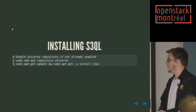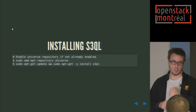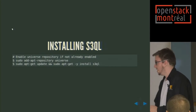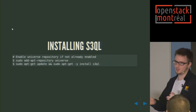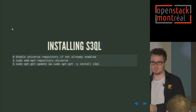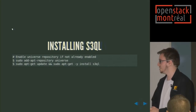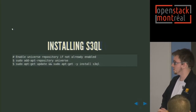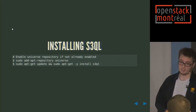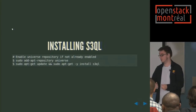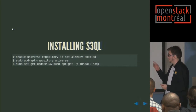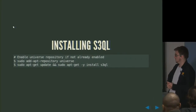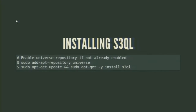Installing S3QL — it's packaged, so no building from source required, though source is also available if you want it. It's packaged in the Universe Ubuntu repositories or available via PPAs. To install it, you enable the universe repositories and then install S3QL. That's really all there is to installing it.